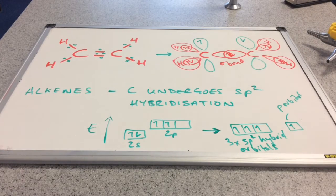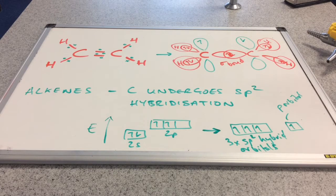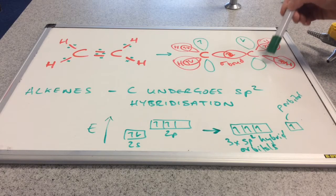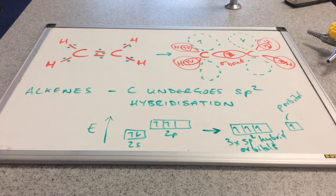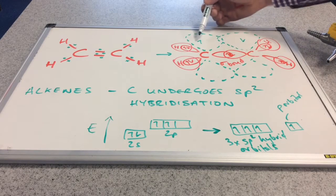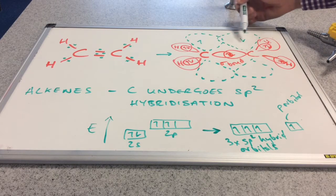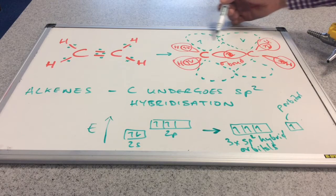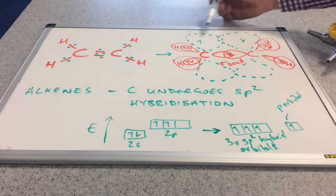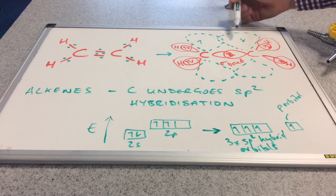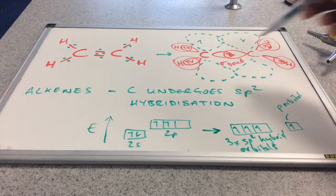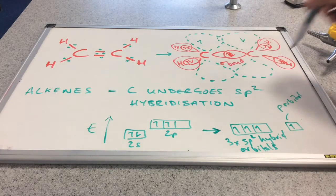So what happens to these p orbitals? Well these regions of space actually start to expand, until eventually they actually start to overlap. So you can see this green dotted line is the p orbital which is expanding and it's actually starting to overlap with the one on the right.